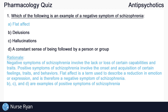Negative symptoms of schizophrenia involve the lack of or the loss of certain capabilities and traits. Positive symptoms of schizophrenia involve the onset and acquisition of certain feelings, traits, and behaviors. Flat affect is a term used to describe a reduction in emotion or expression, and is therefore a negative symptom of schizophrenia. B, C, and D are all examples of positive symptoms of schizophrenia.